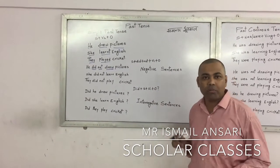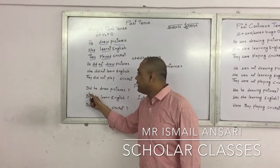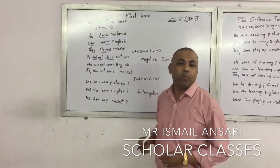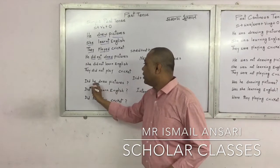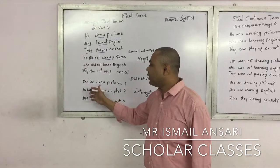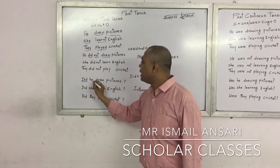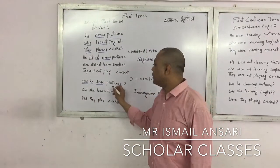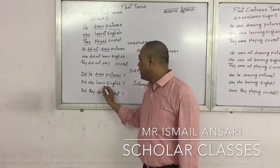We have to use a question mark at the end of an interrogative sentence. The interrogative sentences are: Did he draw pictures? — 'Kya usne chitro ko banaaya hai?' Did she learn English? 'Did' is acting as a helping verb, which is why we place it before the subject. 'He' is the subject, 'draw' is the first form of the verb, and 'pictures' is the object.